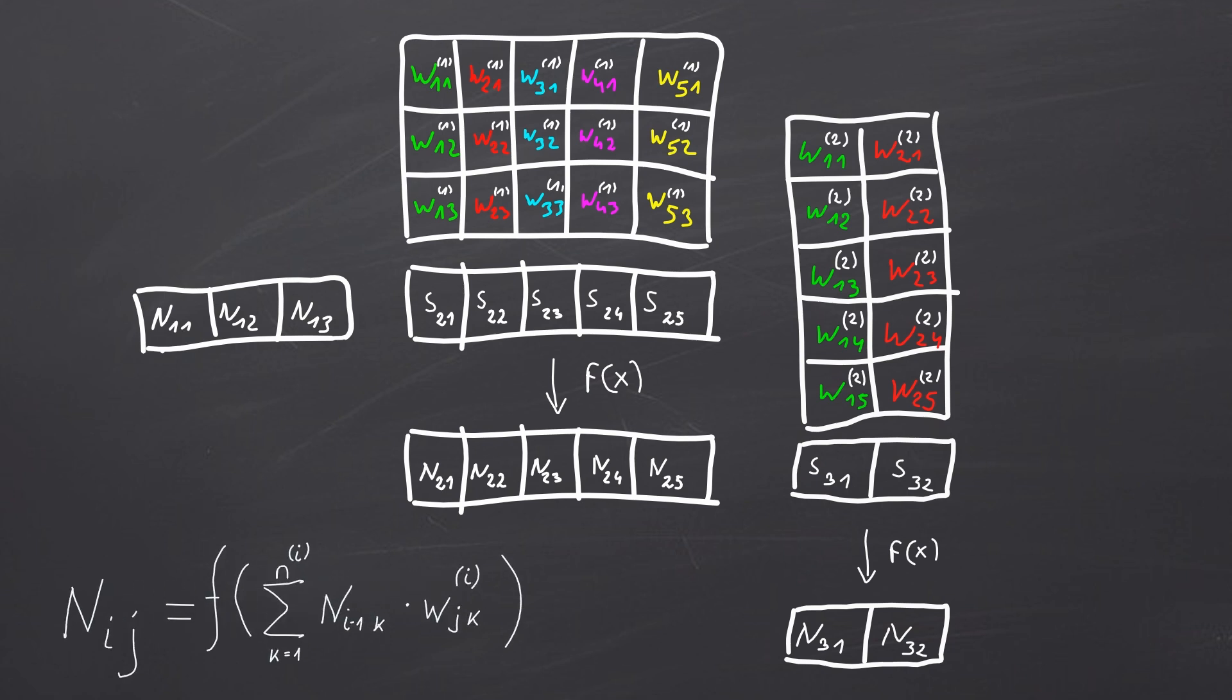On this image we see the whole flow of the neural network calculation. Looks a bit like a waterfall. This leads us to the general formula for calculating any neuron in the network. i stands for the layer number. j represents the neuron number within the layer. n with index i denotes the size of the layer. w with upper i index is the weight matrix for this layer. This formula will help us to train the network.